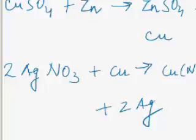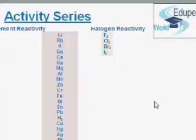The activity series is also useful in predicting whether a metal can displace hydrogen from an acid or not. Metals occurring above hydrogen in the activity series can displace hydrogen from acids, but metals occurring below hydrogen in the activity series cannot displace hydrogen from acids.